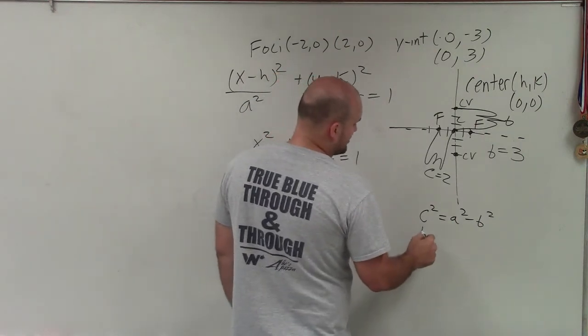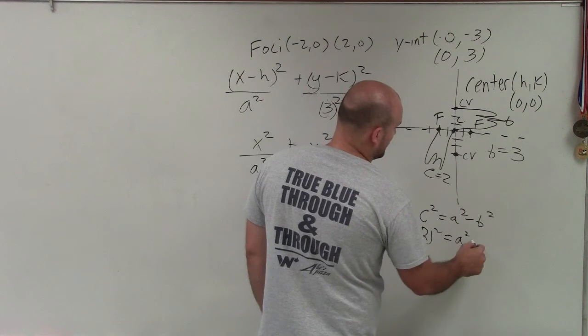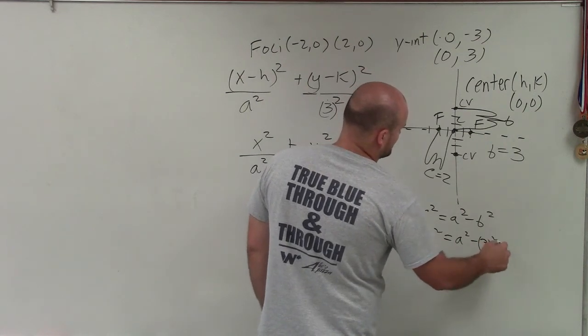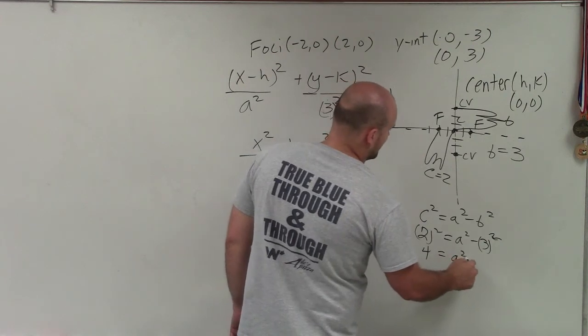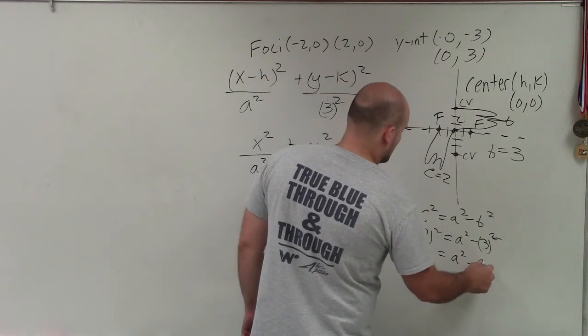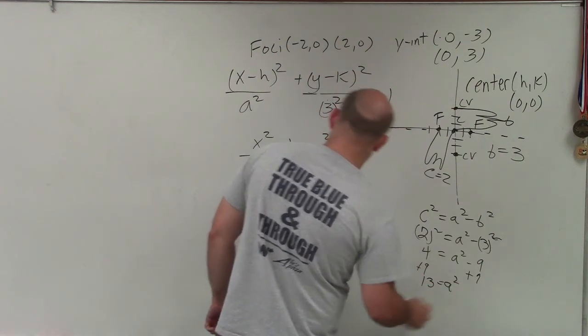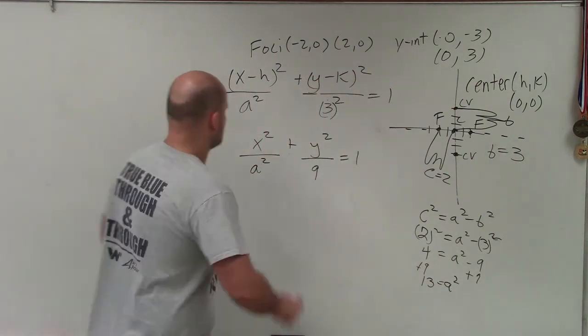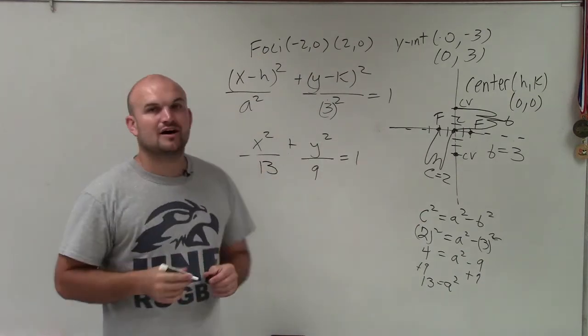We know c² = 2² = 4, and that equals a² - 3². So 4 = a² - 9. Adding 9 to both sides, 13 = a². Therefore, I can plug in 13 for a², and now I have my equation of the ellipse.